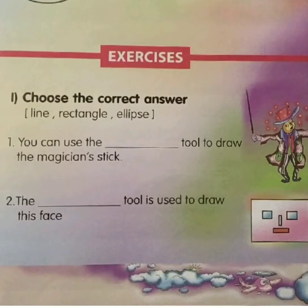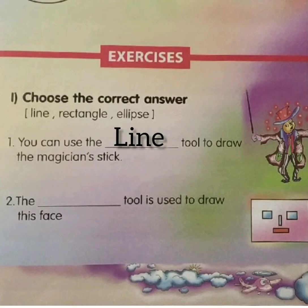The first exercise is 'choose the correct answer.' The options given are: line, rectangle, and ellipse. First question: you can use the blank tool to draw the magician's stick. The answer is line tool. You can use the line tool to draw the magician's stick, so we have to write the answer: L-I-N-E.